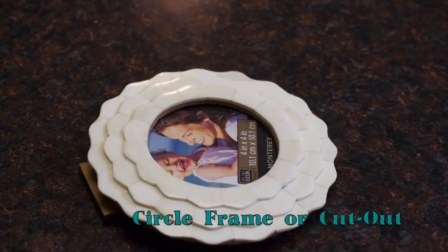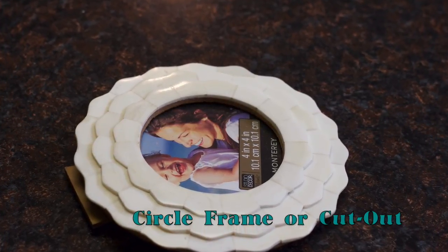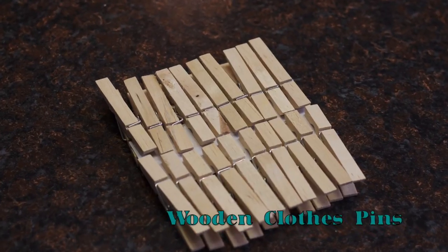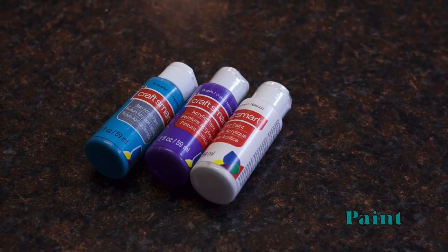For this DIY, you'll need a circle frame, but you can cut out a circle from a piece of foam board or cardboard, a hot glue gun, wooden clothes pins, and paint, or you can also use spray paint as well.